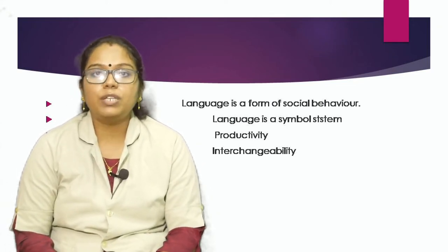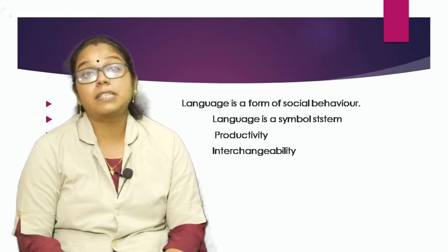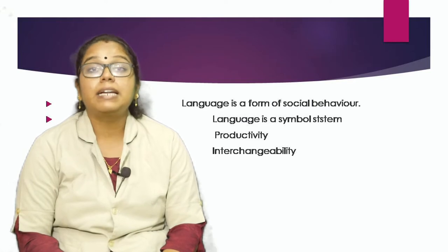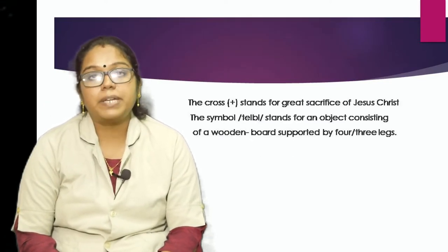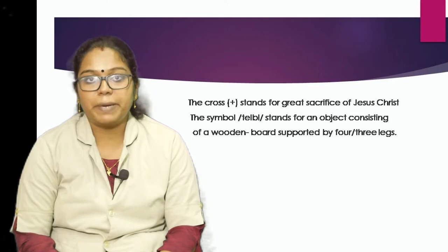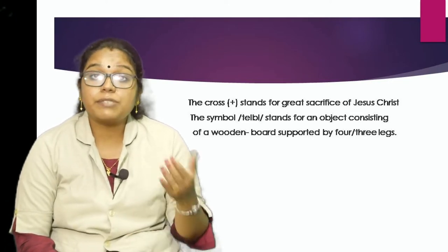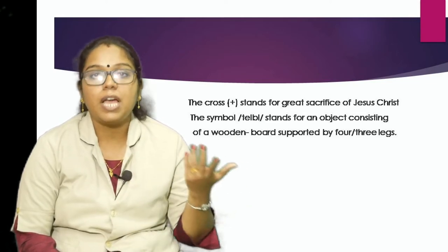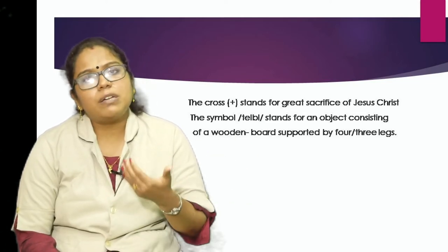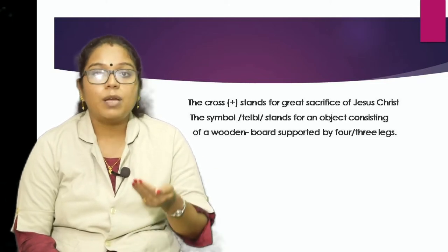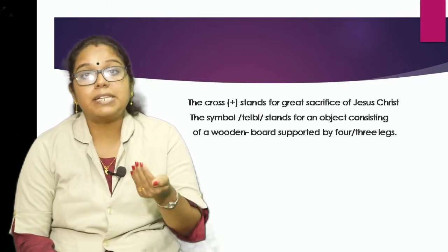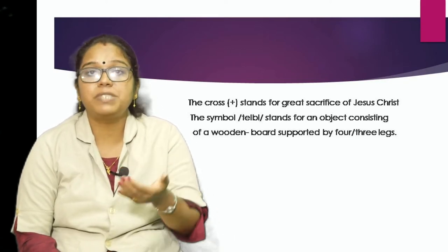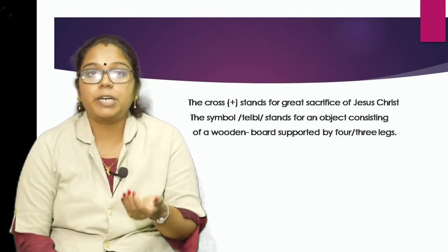The seventh point: language is a symbol system. A symbol is a concrete event, object, or mark that stands for something relatively abstract. For example, the cross sign stands for the great sacrifice of Jesus Christ — his suffering and death on the cross. It is also a symbol of a Christian. Similarly, words are symbols that stand for objects; the symbol 'table' stands for an object consisting of a wooden board supported by three or four legs.